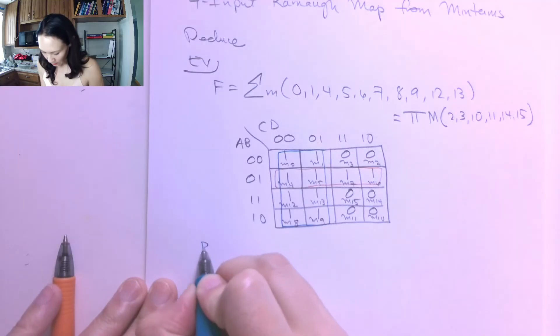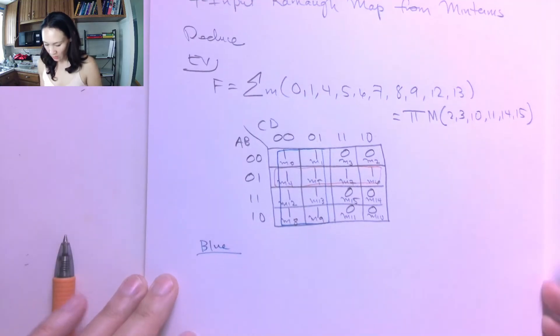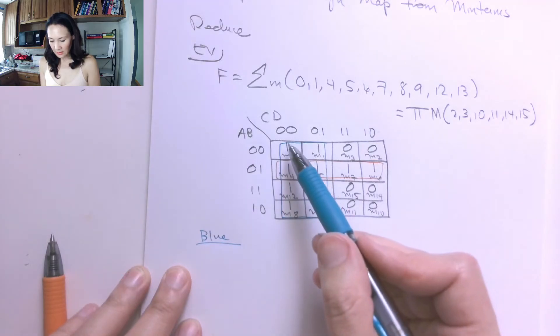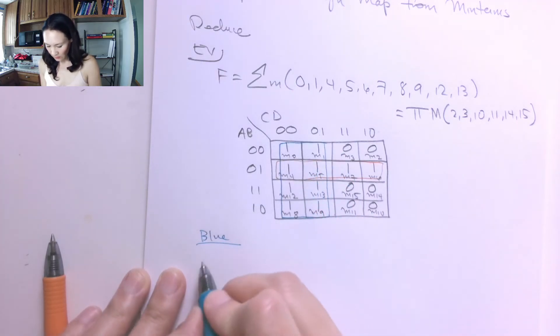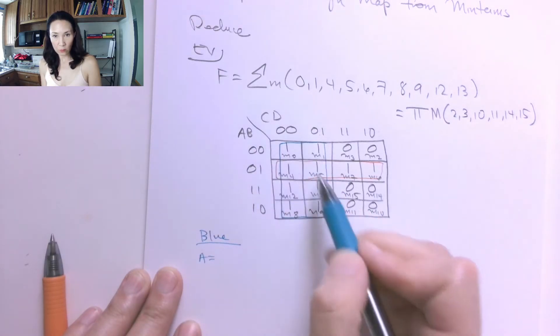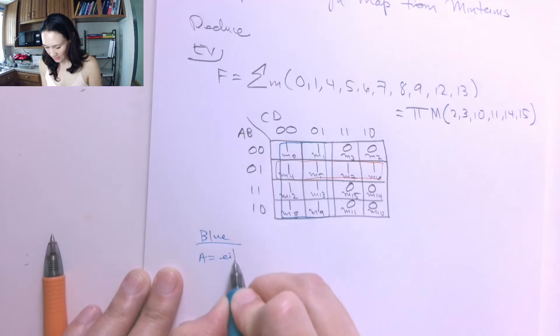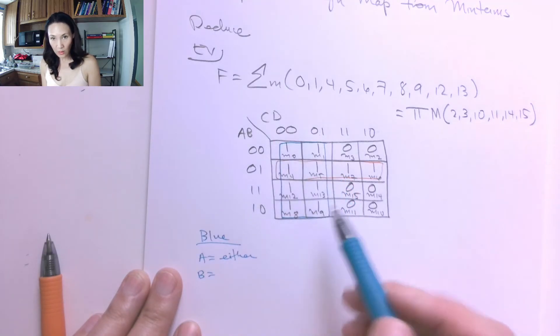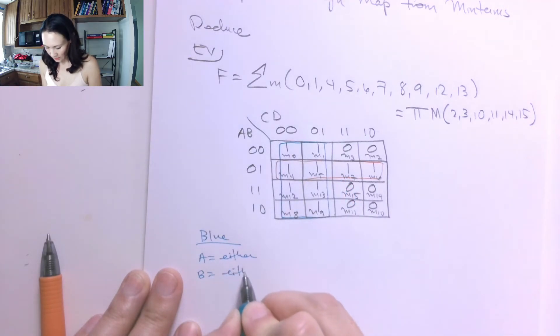So then for our blue group, what do we have? Well, A and B, since this spans all of the rows, we know that A can be either 0 or 1, and we'll have 1s in this blue group. So this is either. B, same story. If B is 0 or 1, it doesn't matter. We're going to have 1s in our blue group, either.